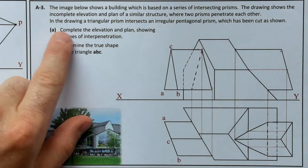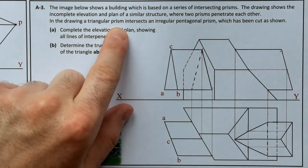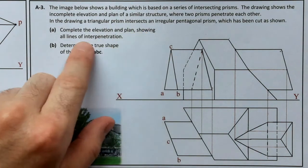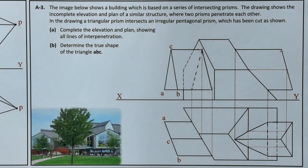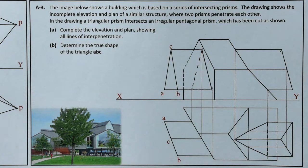That's where it actually enters the surface completely. So that's Part A done — complete the elevation and plan showing all lines of interpenetration.